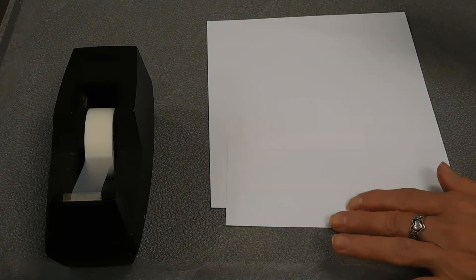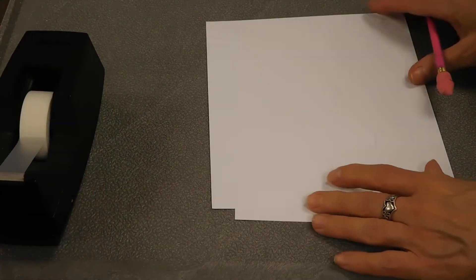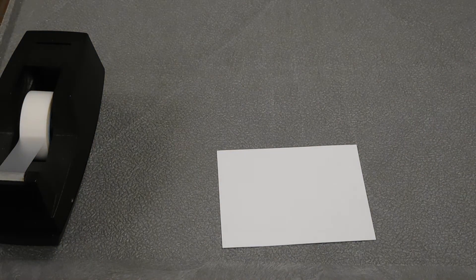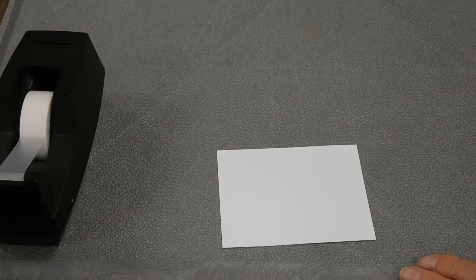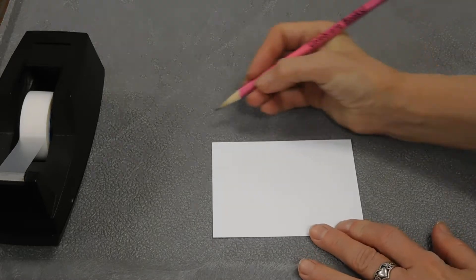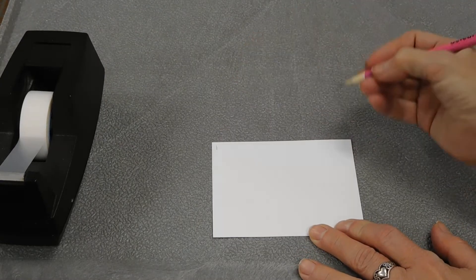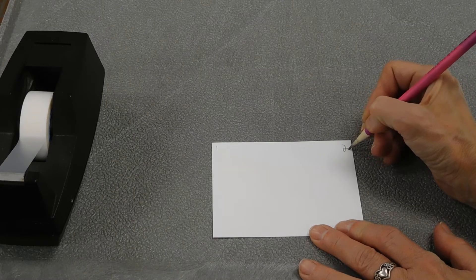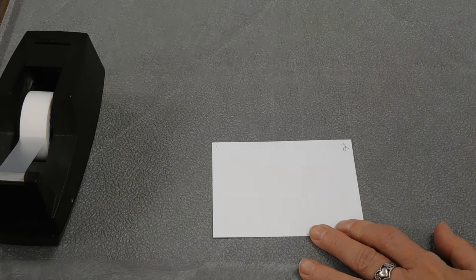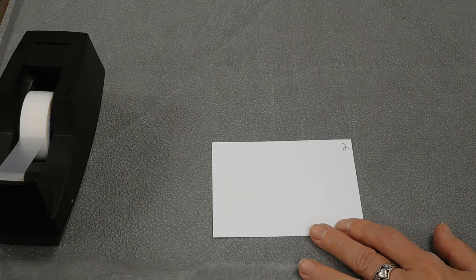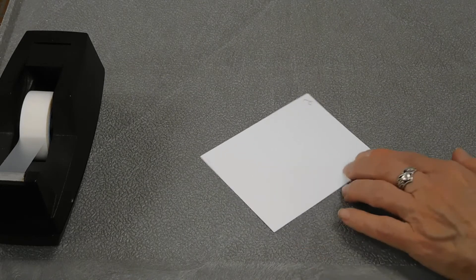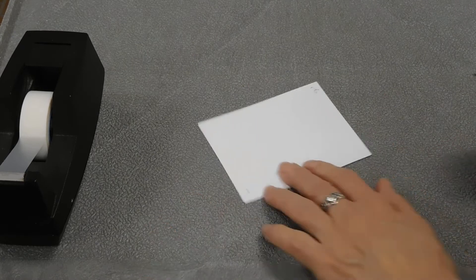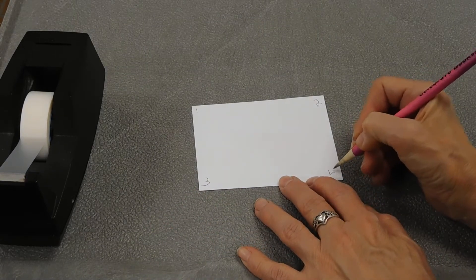I'm going to number each corner of my paper here. Starting in the upper left, that will be one, then the upper right is two, the lower left is three, and the lower right is four.